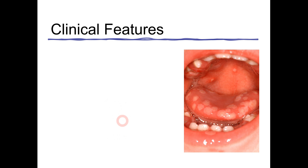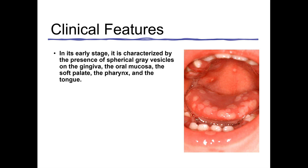Let's talk about the clinical features of acute herpetic gingivostomatitis. In this clinical picture, you can appreciate ulcers present around the palate, tongue, and gingiva — this is the most classical presentation. In the initial stages, spherical gray vesicles are present and can occur on the gingiva, oral mucosa, soft palate, pharynx, or tongue — anywhere in the oral cavity.